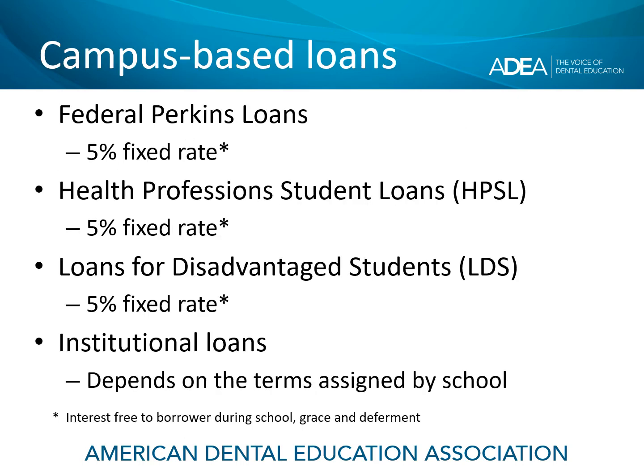Some of you may have what are called campus-based loans, depending on the school you attend and the availability of these loans at your school. Federal Perkins loans have a 5% fixed rate — some of you may have federal Perkins loans from college or a post-bac program. Health profession student loans also have a 5% fixed rate, as do loans for disadvantaged students, called LDS.